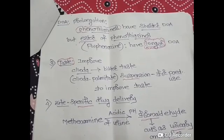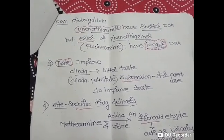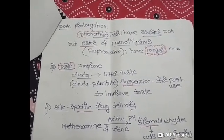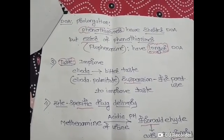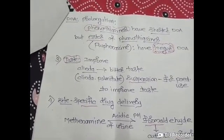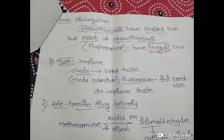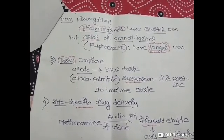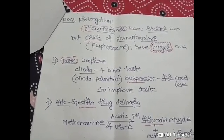Another significance of prodrugs is prolongation of duration of action. For example, phenothiazines have a shorter duration of action, but if we use esters of phenothiazines like fluphenazine, which is a prodrug, they have a longer duration of action.